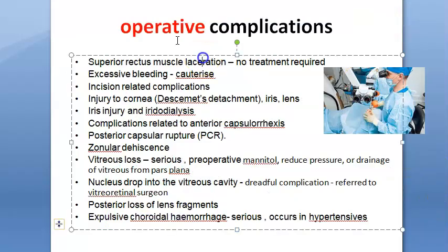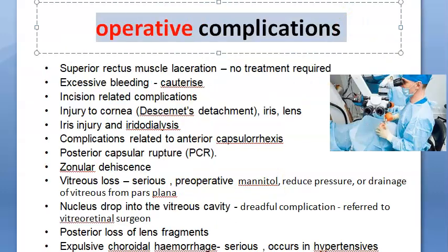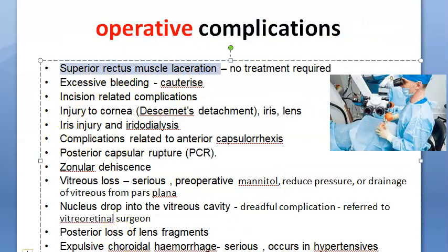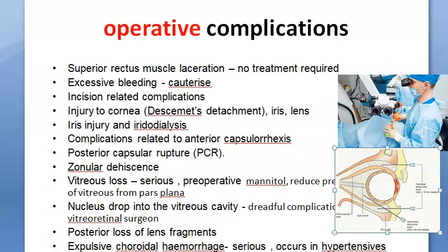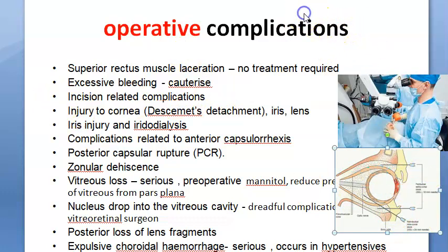Now they will start the operation. Superior rectus muscle laceration can happen — the superior rectus muscle can get lacerated. There can be excessive bleeding, for which you will have to cauterize. Incision-related complications can also occur.